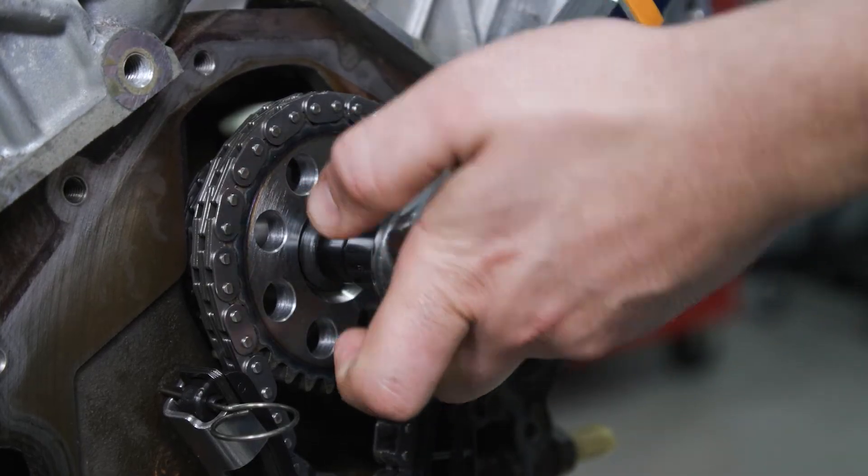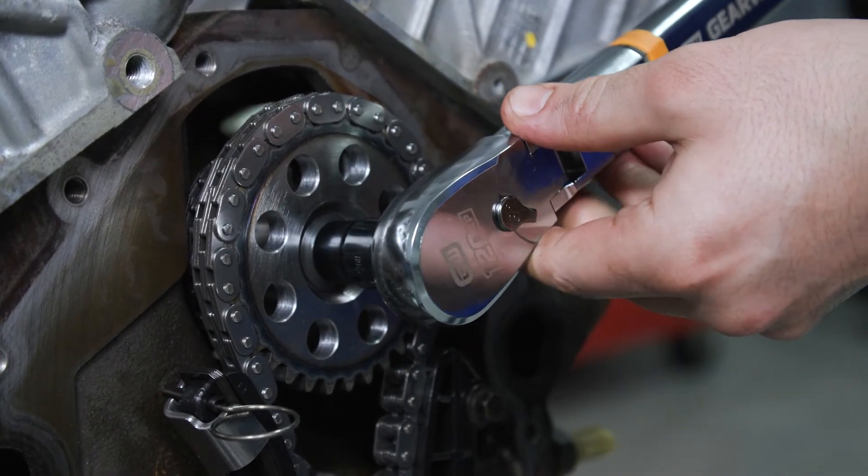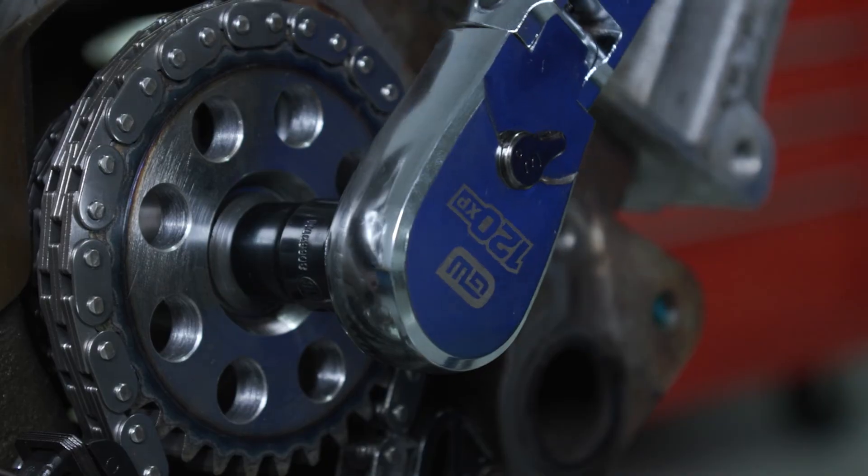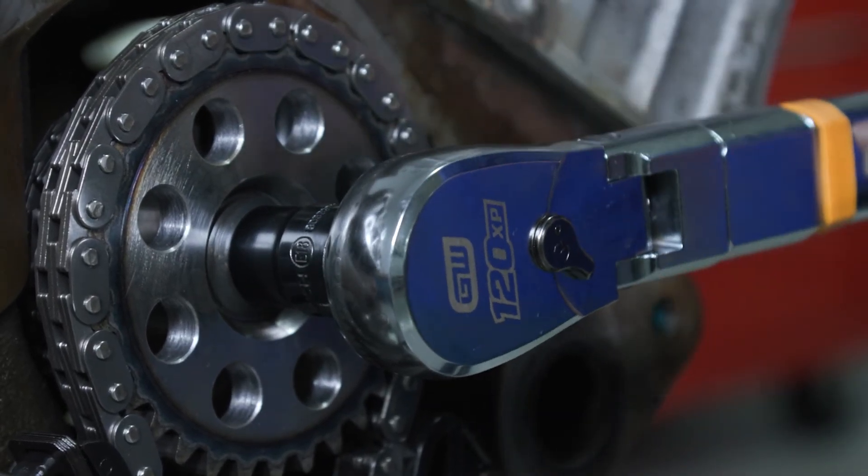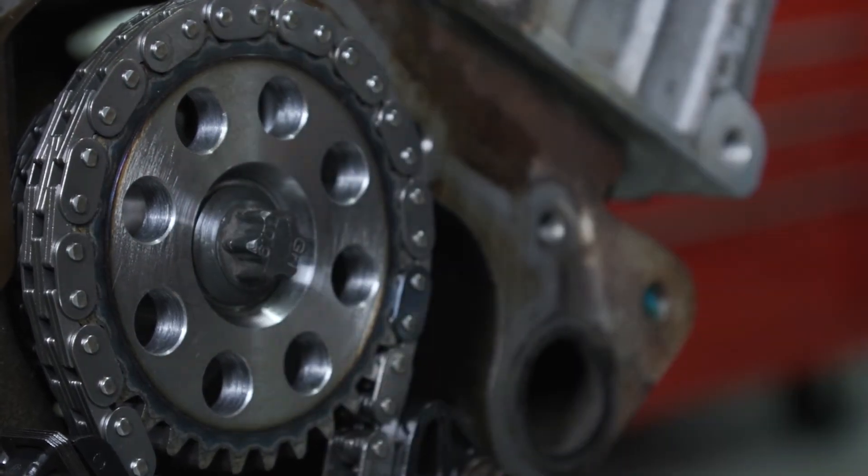Then the front primary chain jack shaft bolt to 33 foot-pounds plus 90 degrees. This again is a torque to yield bolt that should not be reused.